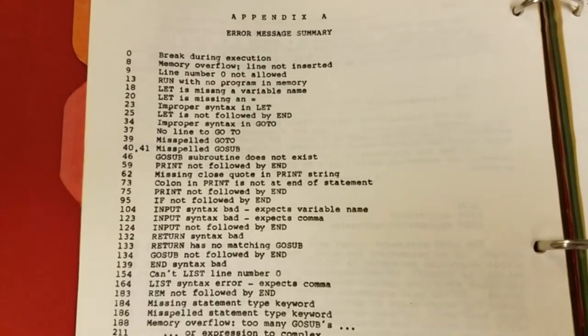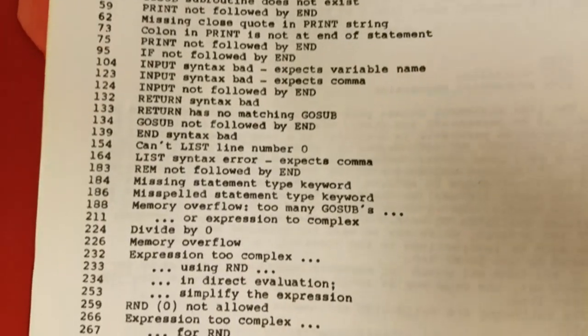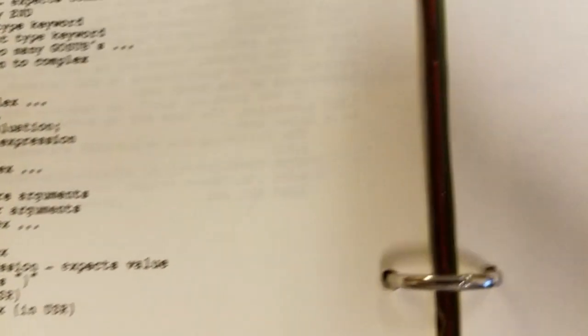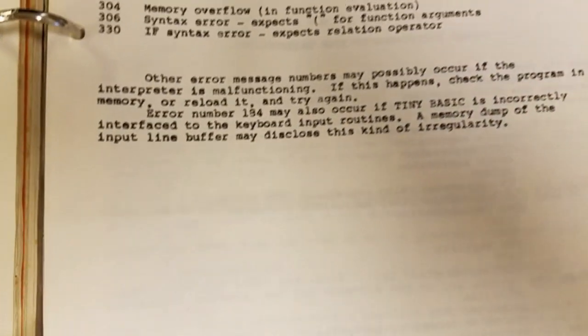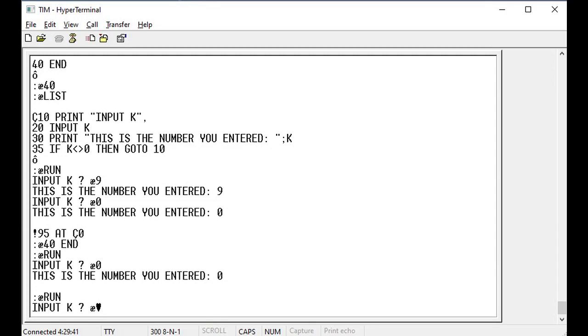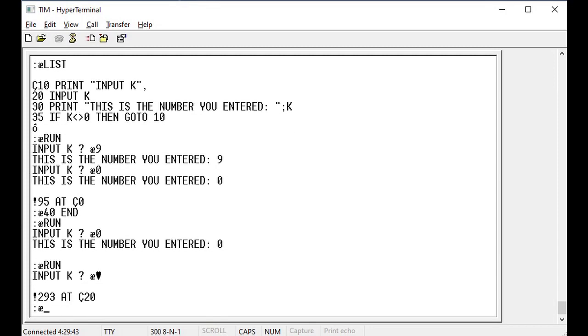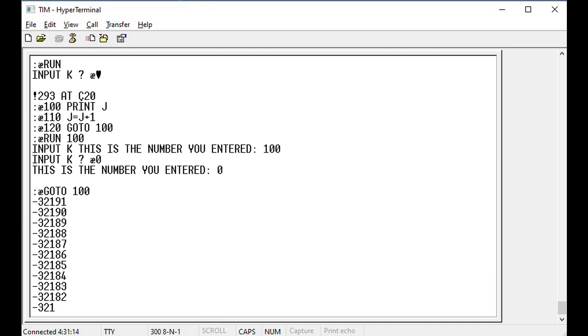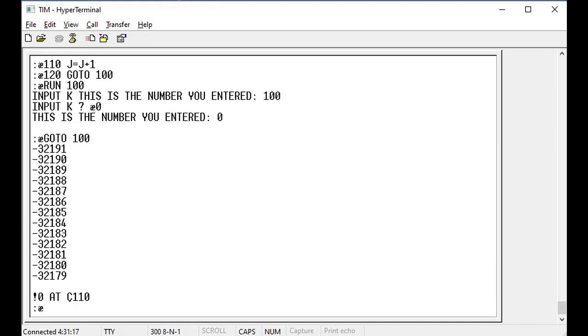Because of the small size of TinyBasic, error numbers are used instead of error statements. When an error is encountered, TinyBasic will print the error number, followed by the line number. The BASIC program execution can be terminated by typing CTRL-C.